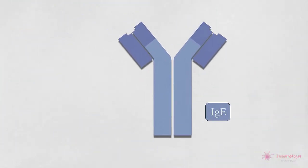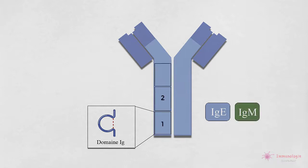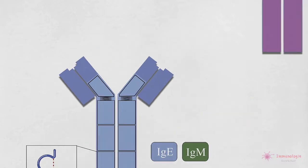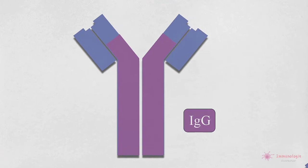Comme nous l'avons vu dans la vidéo précédente, les chaînes des molécules d'anticorps sont organisées en domaines immunoglobulines. Dans les anticorps IgE et IgM, les régions constantes de la chaîne lourde contiennent quatre domaines immunoglobulines en tandem, alors que les régions constantes des IgG, IgA et IgD ne contiennent que trois domaines.